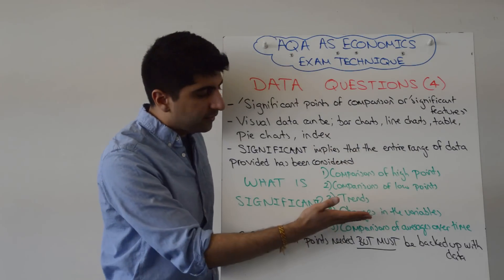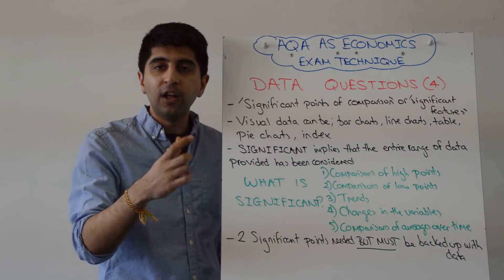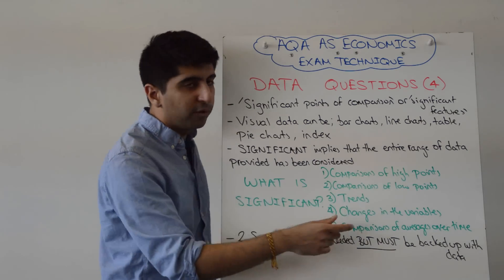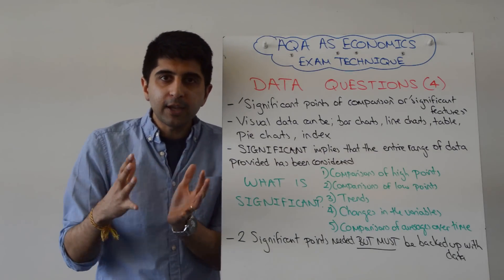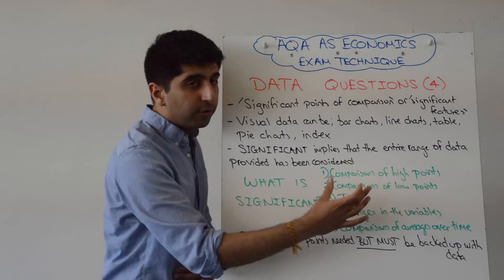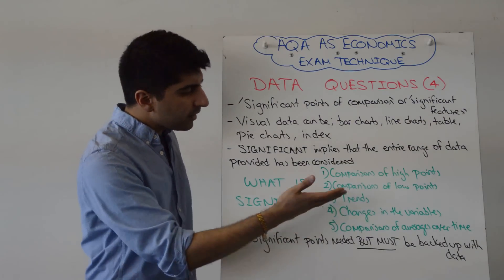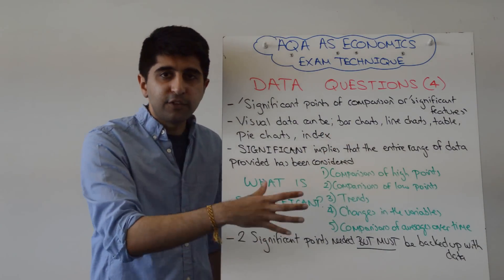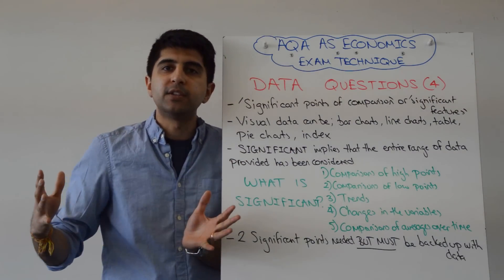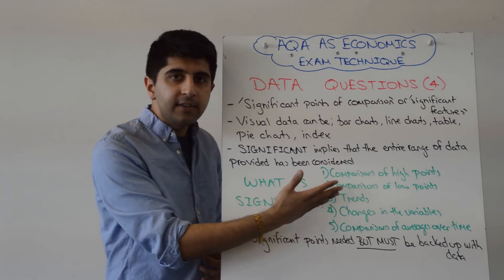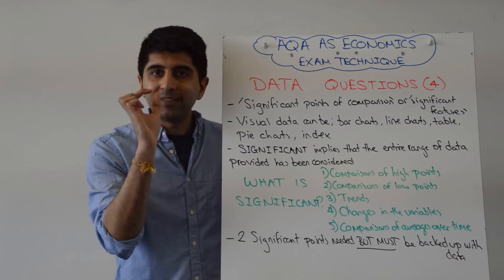So I've said comparisons here. If it's just significant feature, ditch comparison, you're just looking for the high point, for example, of that one variable, the low point for that one variable, the average for that one variable. But if it's a significant point of comparison, you're looking at high points comparing the two variables, low points comparing the two variables. And each of these five things, if you write these things down, it implies that you've looked at the entire range of data. You can't do any of these things without looking at the range. So these five things constitute significant.